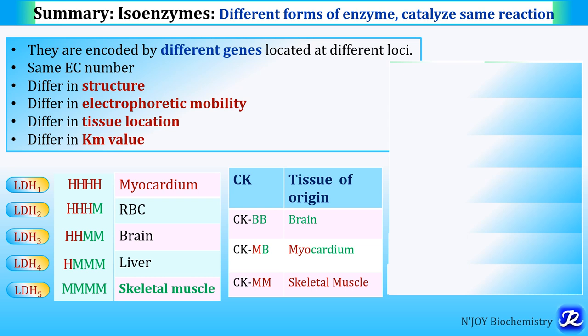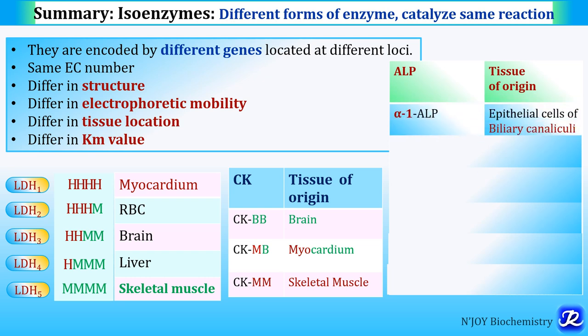For alkaline phosphatase, which has 6 isoenzymes: Alpha-1, present on epithelial cells of biliary canaliculi, is increased in obstructive jaundice because obstruction — from gallstones, carcinoma of the head of pancreas, or other tumors — causes irritation of epithelial cells. This alkaline phosphatase is an ectoenzyme on the epithelial cell membrane, so its level increases up to 10 to 12 times the normal reference range in obstructive jaundice.